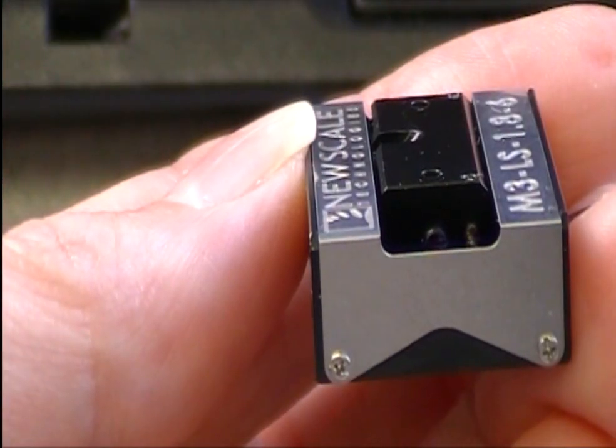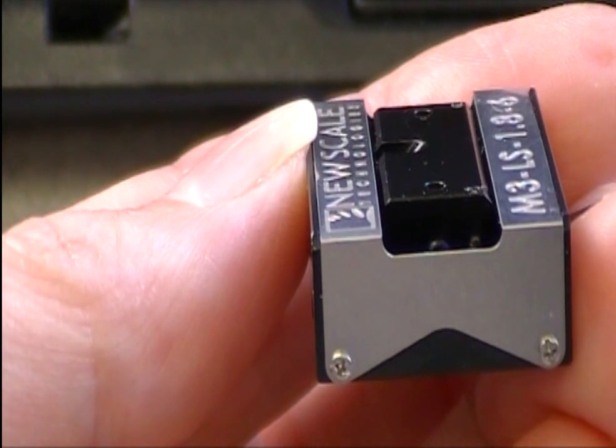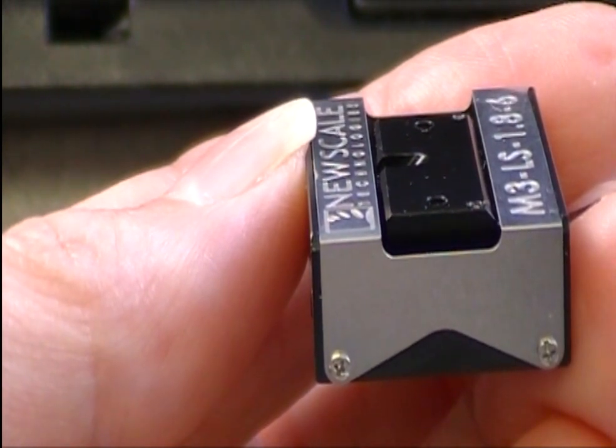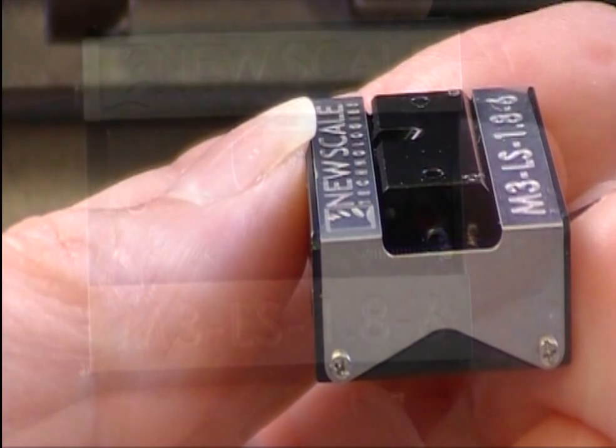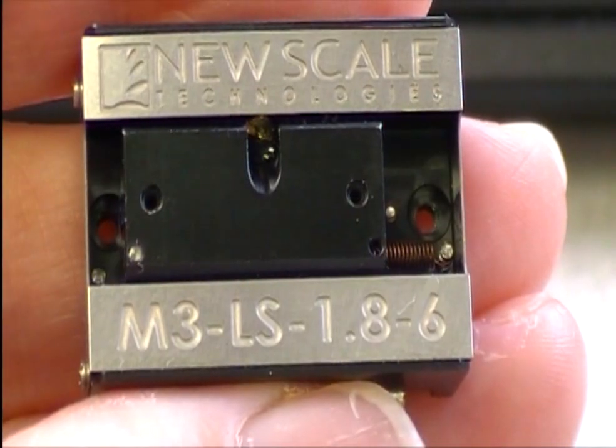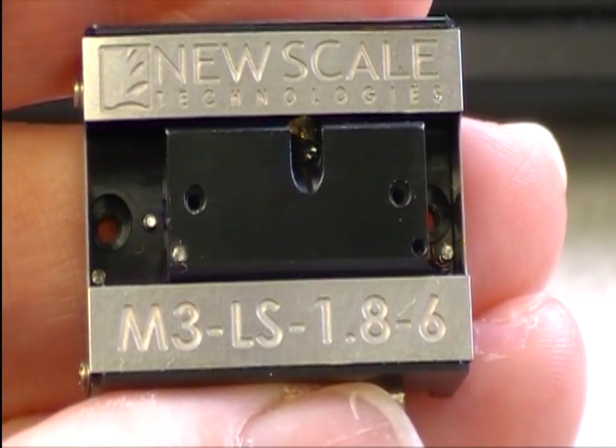Like all M3S Smart modules, the M3LS operates on only 3.3 volts and has low power requirements. So you can easily integrate precision motion into battery-powered, handheld, mobile, and portable devices.